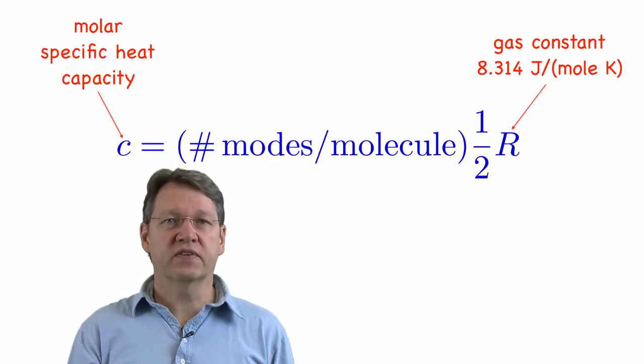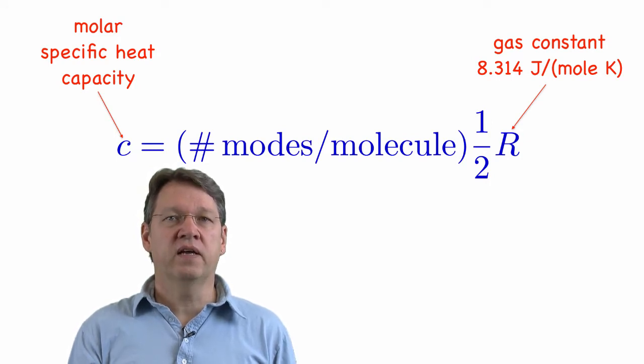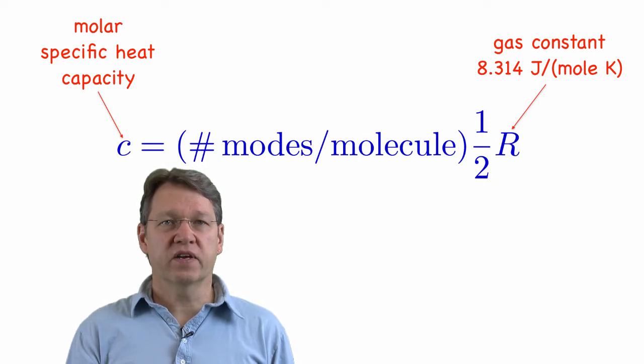We saw how to calculate the molar-specific heat capacity of a gas by finding the number of active modes per molecule, like we saw in the previous lecture, and then multiplying by the gas constant divided by two.